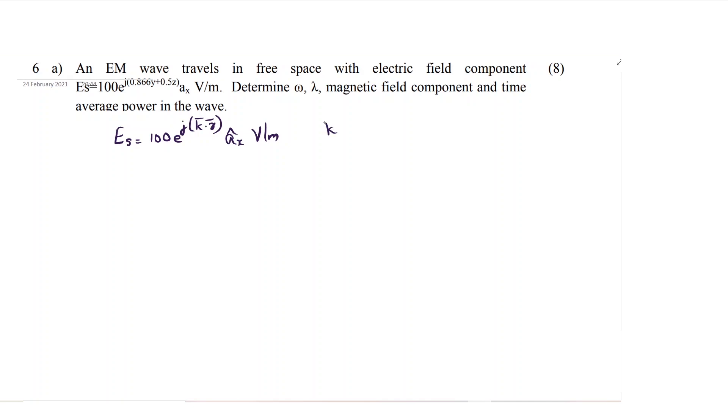From this you can write the vector k as, x term is not there, so it will be 0 ax plus 0.866 ay plus 0.5 az. This is the k vector.